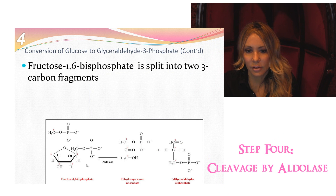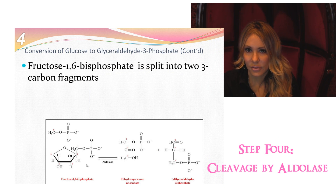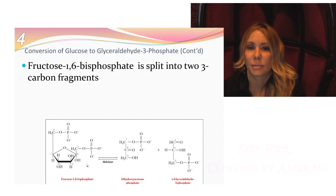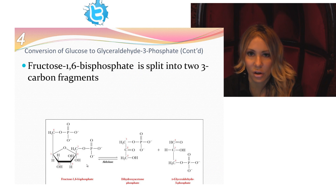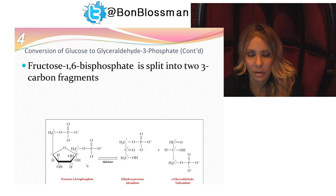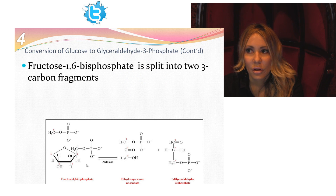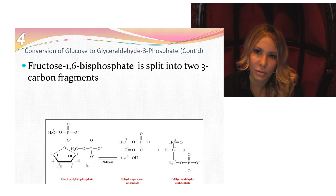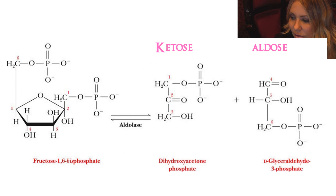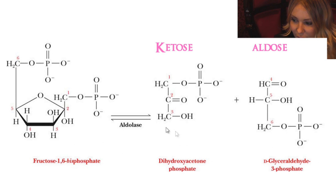The next step is a cleavage step. We have fructose 1,6-bisphosphate, which is a six-carbon molecule, and it will be cleaved into two three-carbon molecules — we haven't lost any carbons in glycolysis. It will be split into two unequal fragments: one is D-glyceraldehyde 3-phosphate, which is an aldose sugar (a triose), and the other is dihydroxyacetone phosphate, which is the ketose sugar.